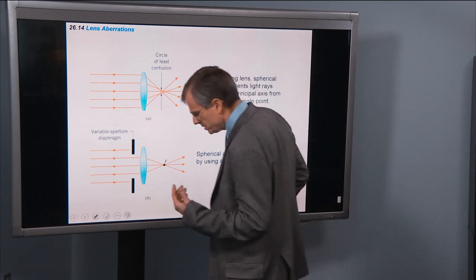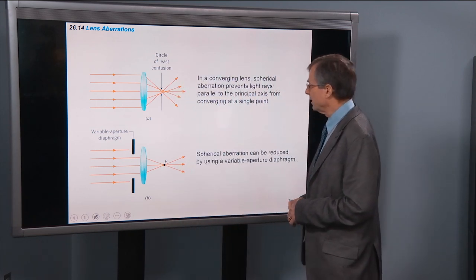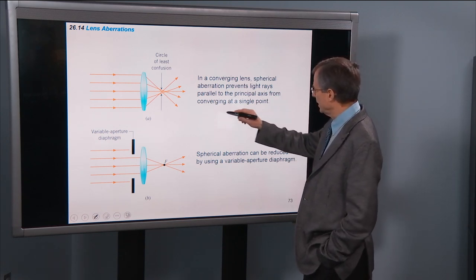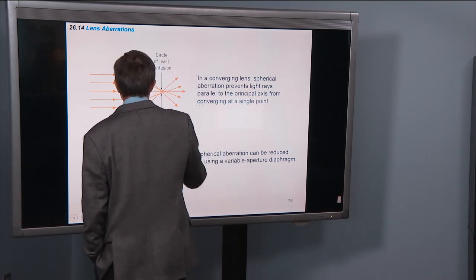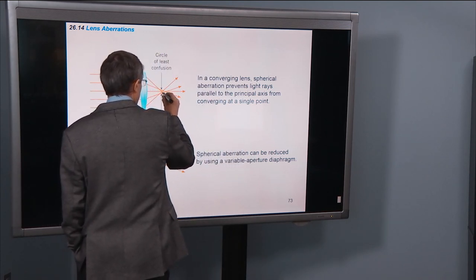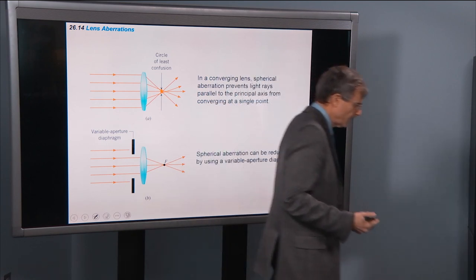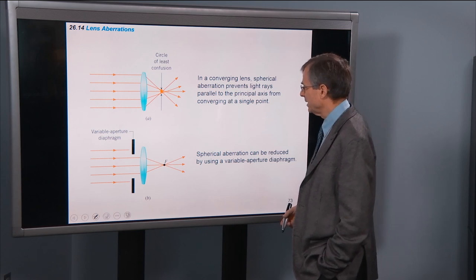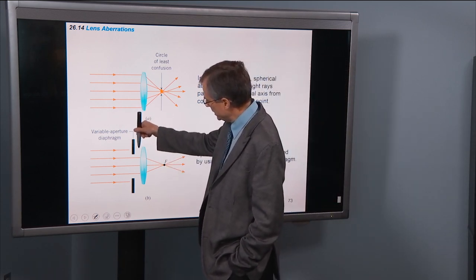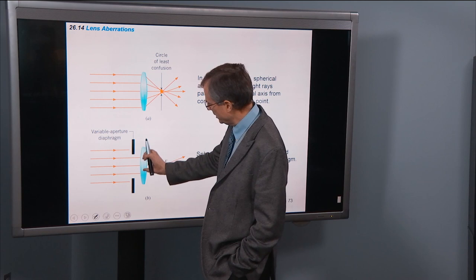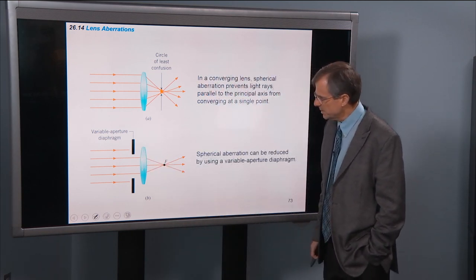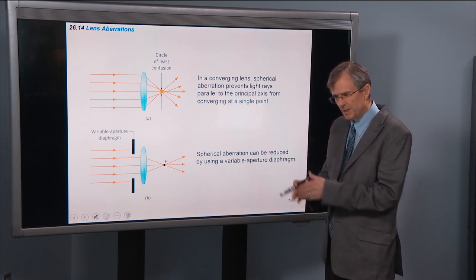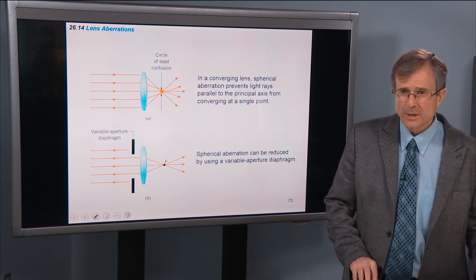We talked with mirrors about spherical aberration. We also get spherical aberration with lenses. And that prevents light rays parallel to the principal axis from converging at a single point. So they don't all converge at the same point. And that's embarrassing, because you want to have a nice sharp image. And that spherical aberration is an enemy to that sharp image. So one thing you can do is to take a diaphragm to stop down this lens. Or you can make it non-spherical and make it a different shape so you get better convergence.